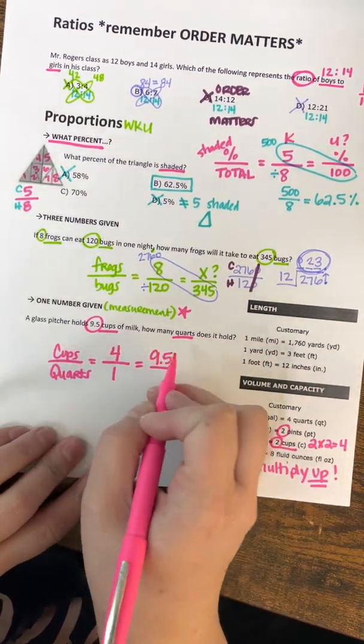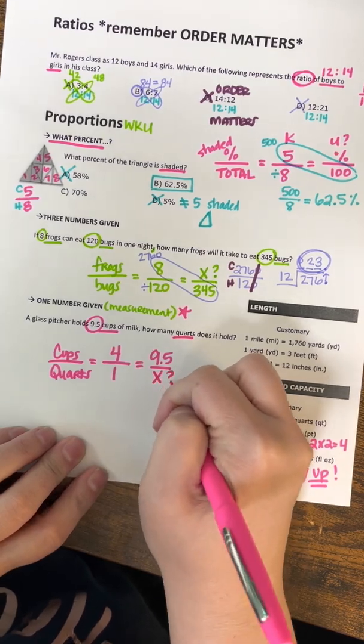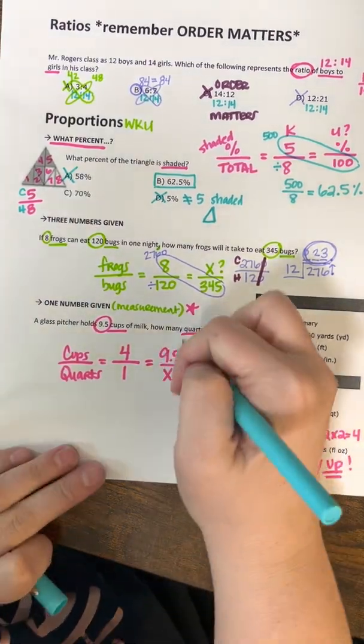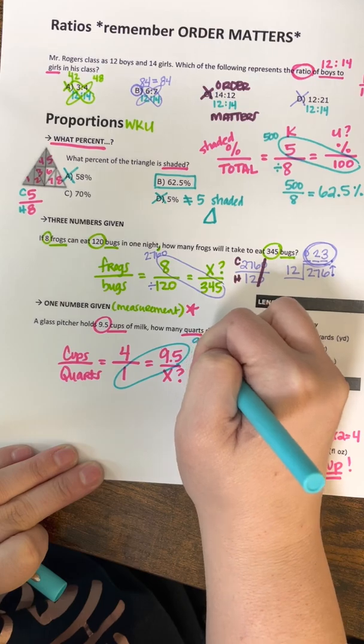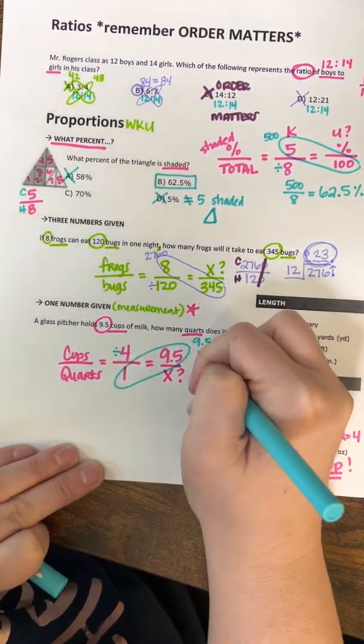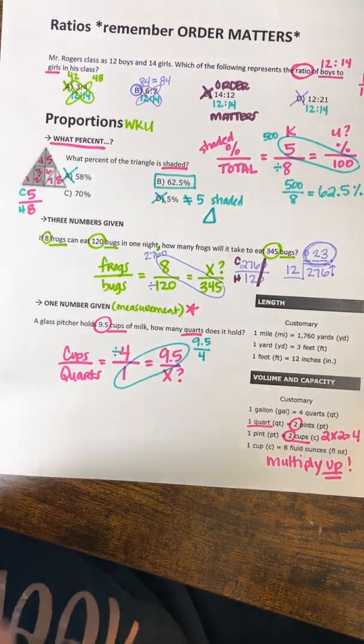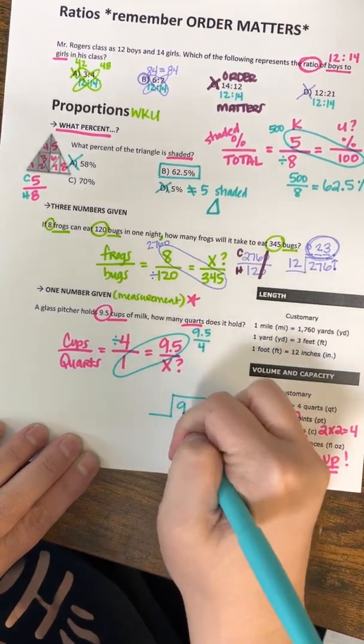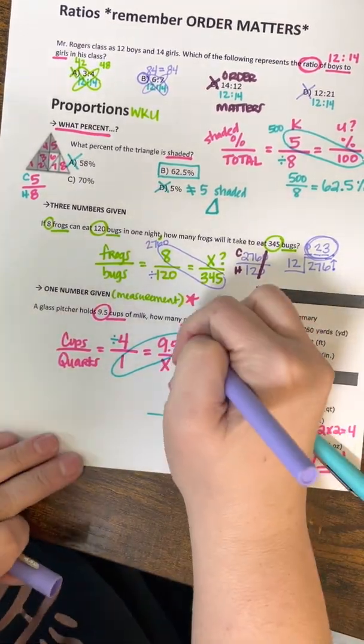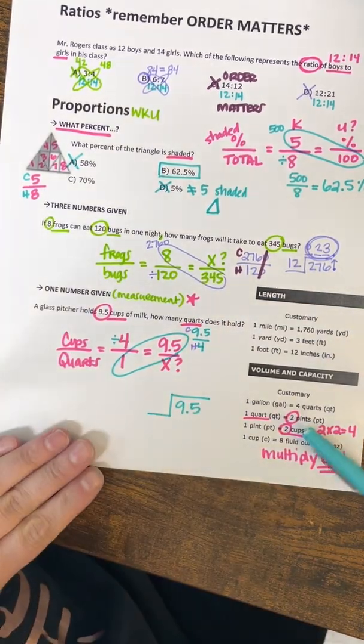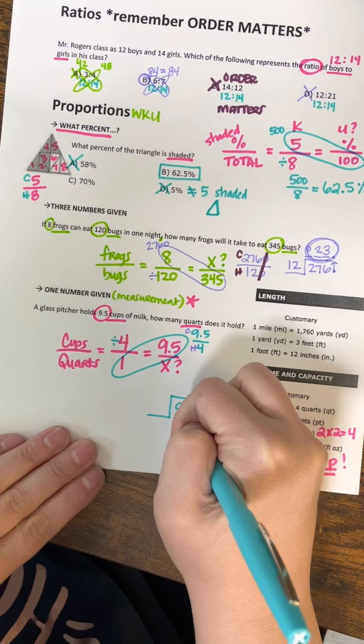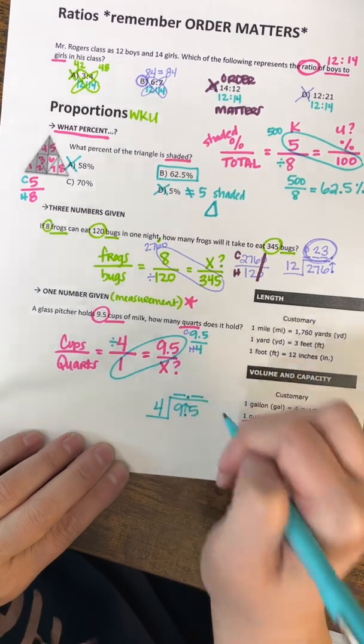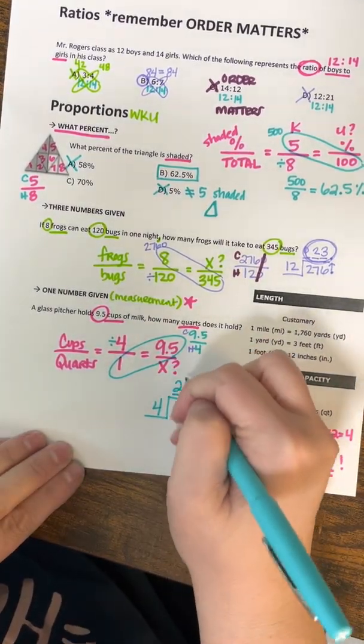From there, my WKU is set up and I can cross multiply and divide. So I'm going to cross multiply 9.5 times 1, which is just going to be 9.5. And then we are going to divide by 4. I do not have any zeros to cross out. But I do have a decimal in my cowboy. And again, I would label my cowboy and horse. And a decimal in the cowboy does not matter. And my horse doesn't have one, so I'm good. I have a blank before my 9 and a blank above my 5.